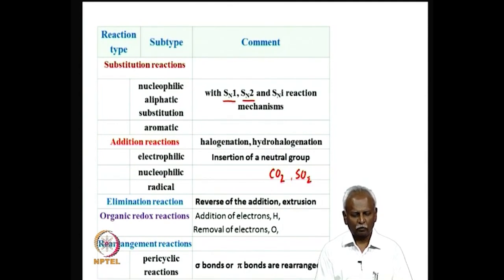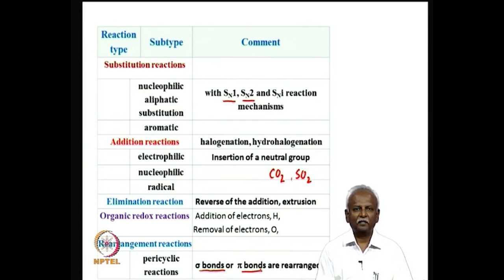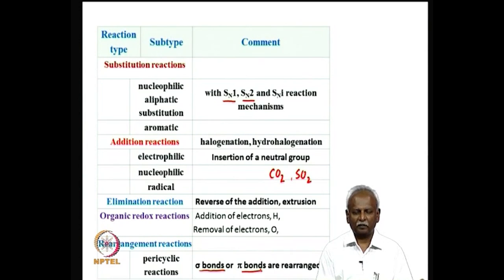Rearrangement reactions could involve purely sigma bonds, purely pi bonds, or a combination of both. Many of these are called pericyclic reactions, which are mostly orbital-controlled and governed by the famous Woodward-Hoffmann rules. Rearrangement reactions are not always pericyclic — large ring systems like norbornene and adamantane skeletons can also rearrange depending on ring size requirements and strain.